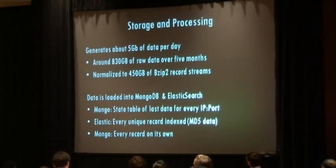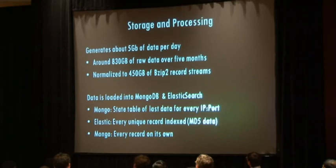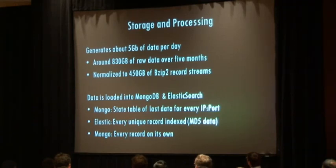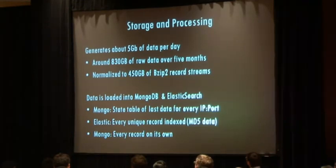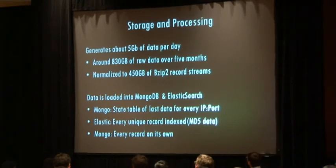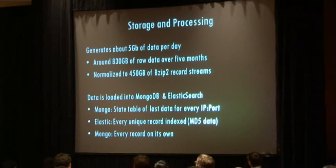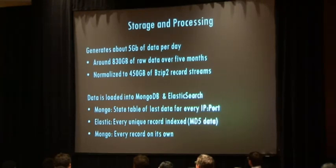Storage so far after about five months is around 830 gigabytes of raw data. Decompressed it's probably about two and a half terabytes; normalized and compressed with bzip2, about 450 gigabytes. It's all stored in a MongoDB database with Elasticsearch on the back end for querying. One server has 98 GB of RAM and 12 cores; the other has 192 GB of RAM and 16 cores. Processing something like 2.5 billion records takes a while.